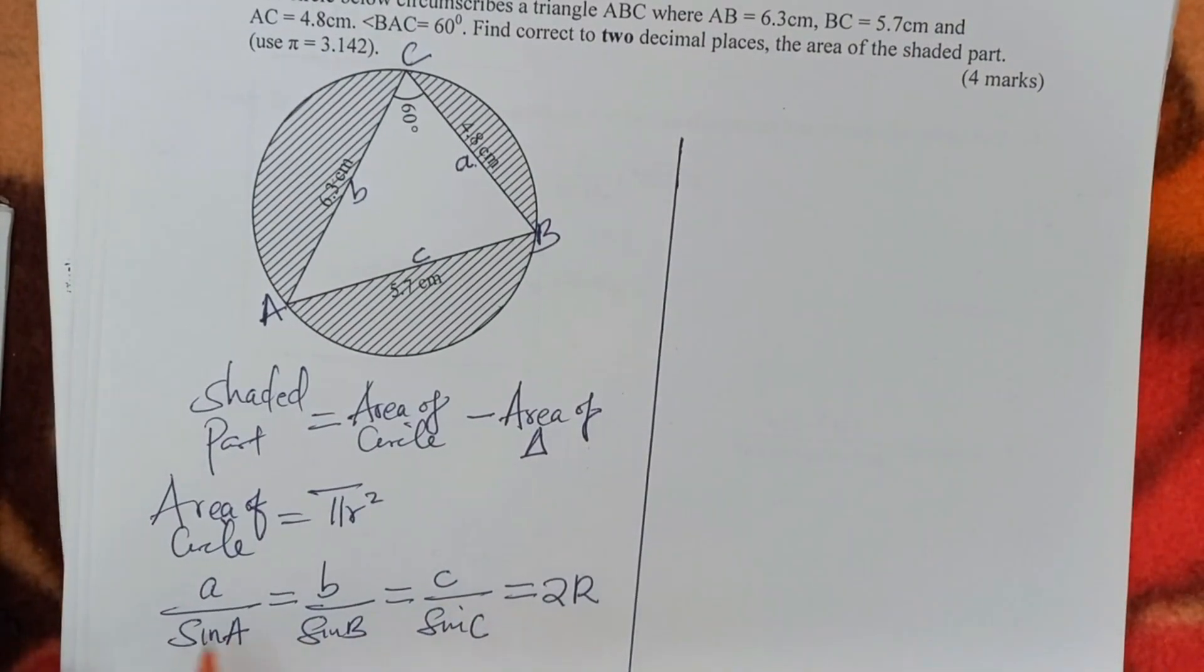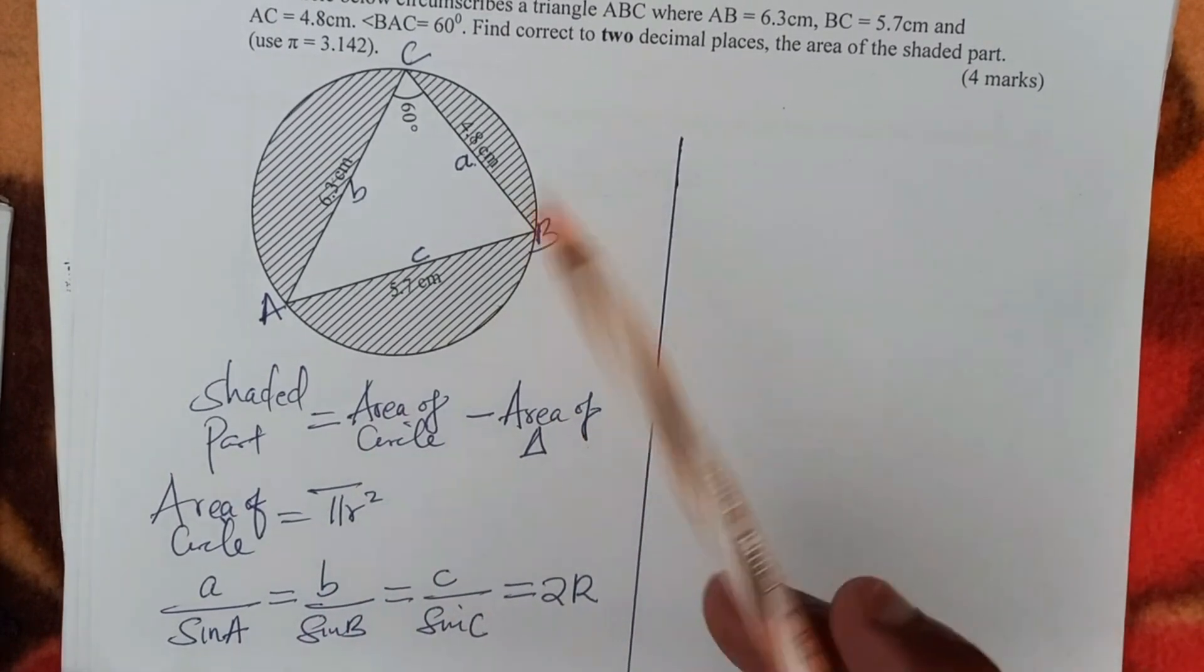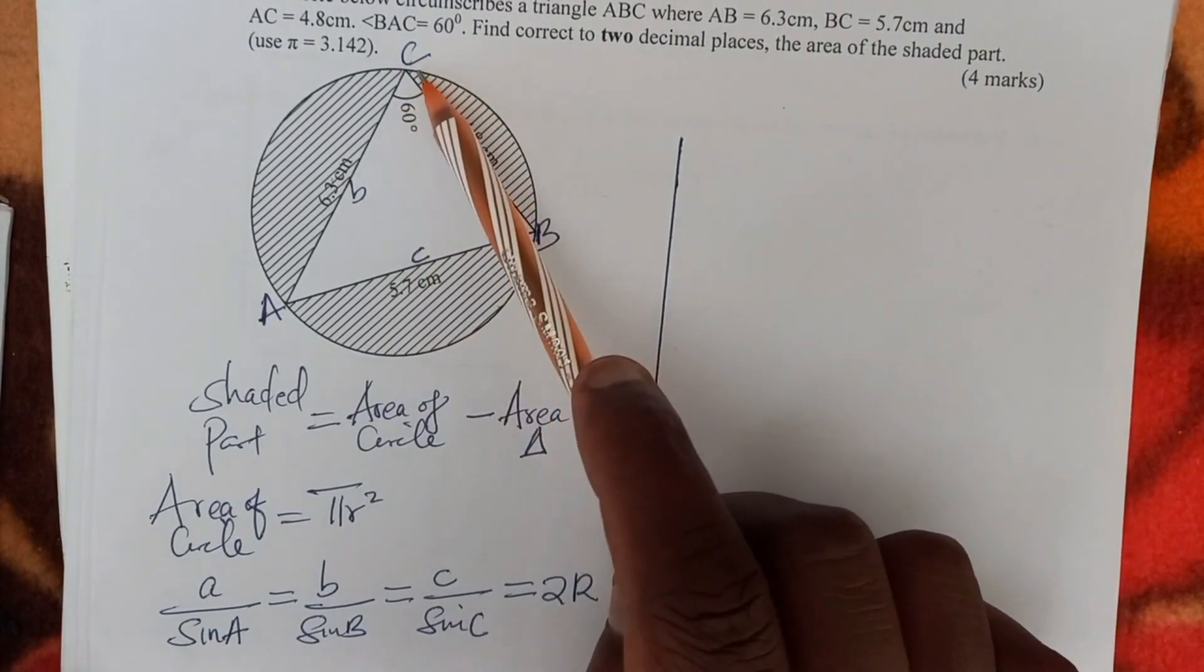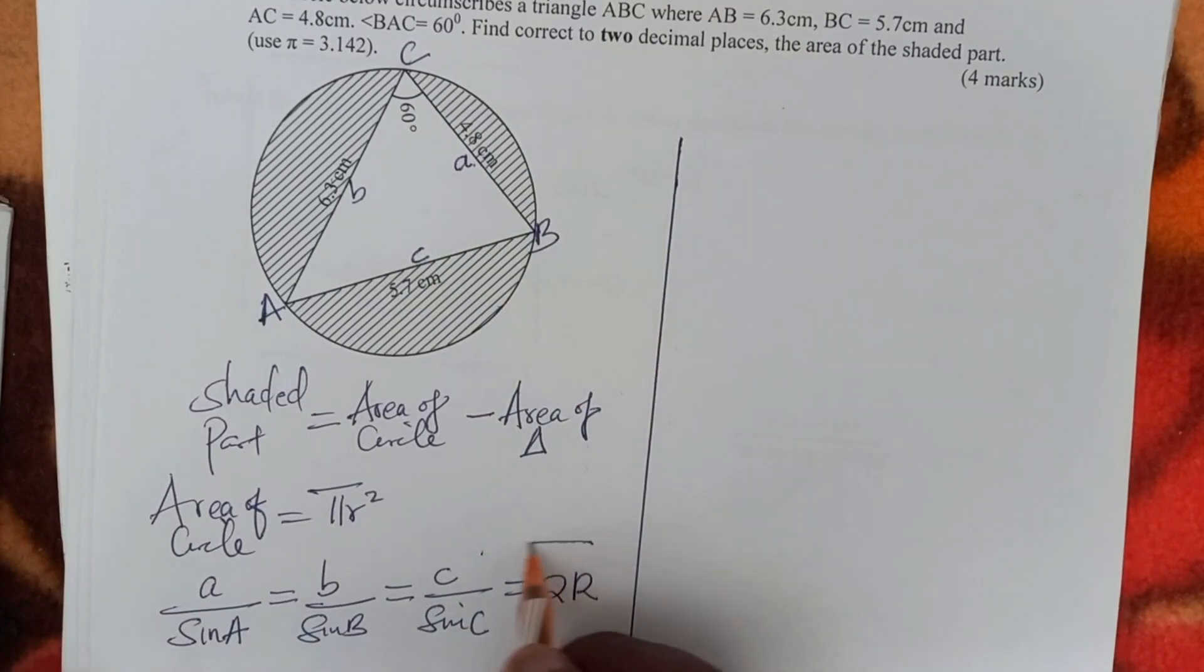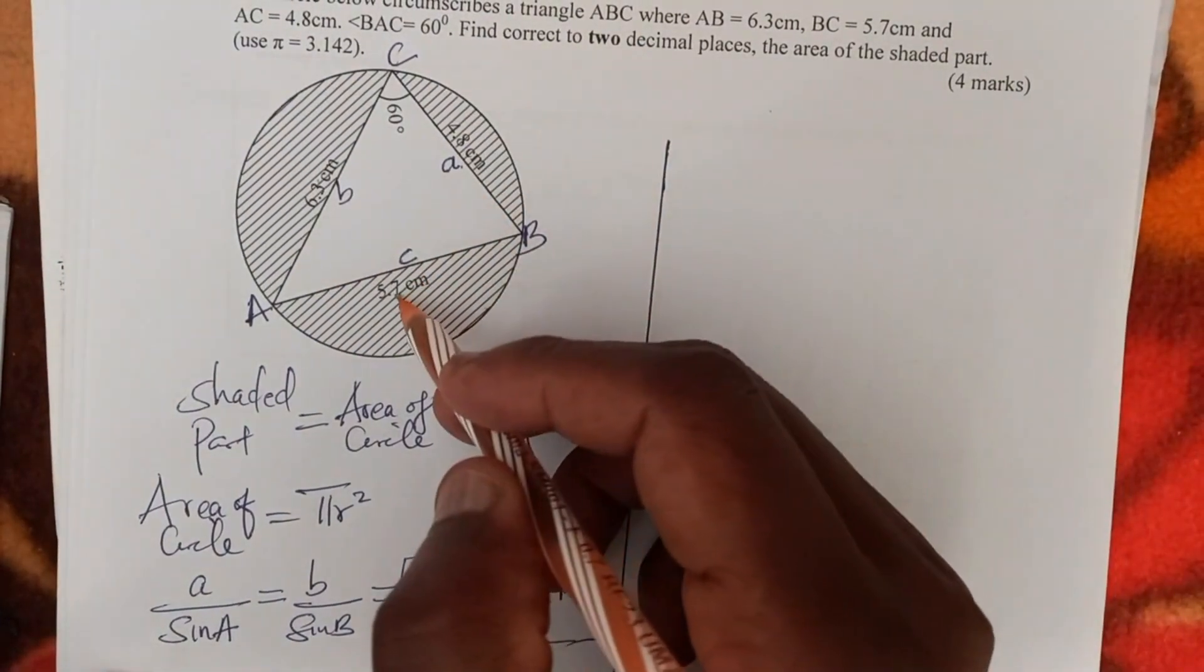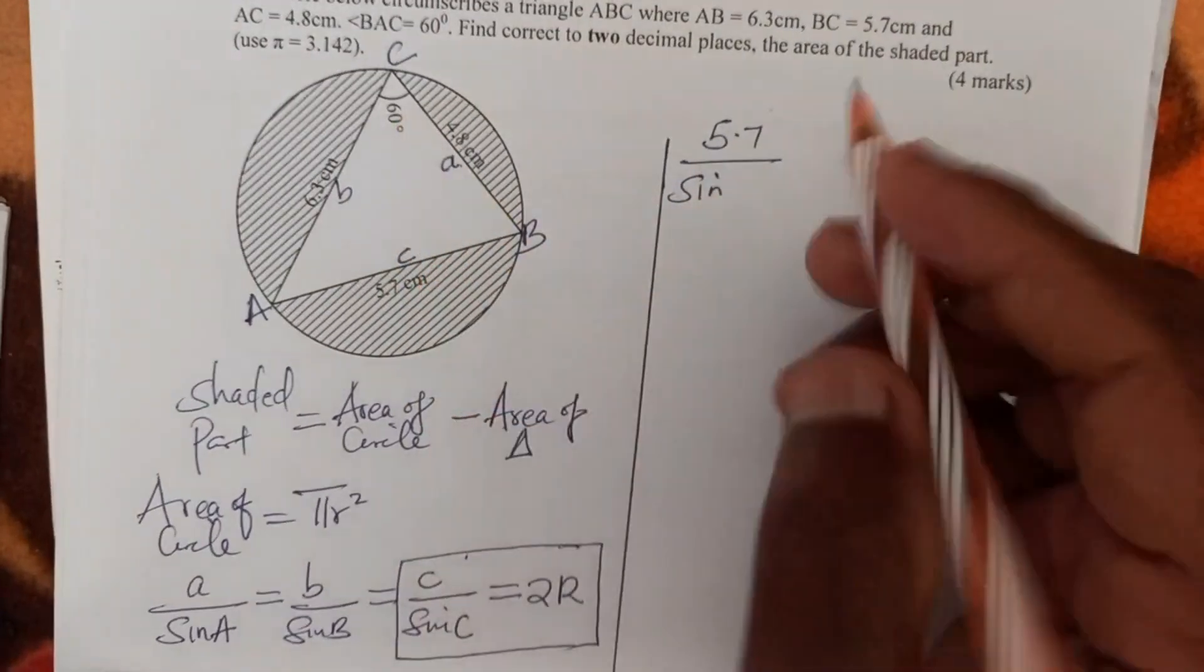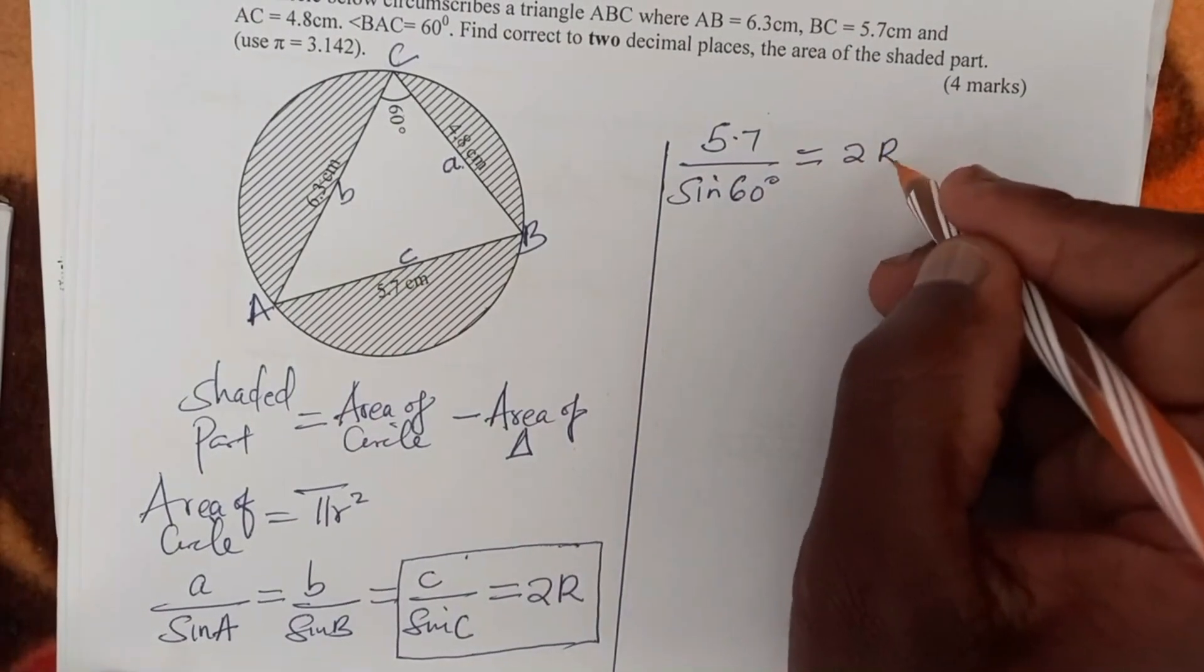We don't need to use all of these. We just consider what we have, where we have an angle and a side. And in this case, when you look at this, we have angle C in the diagram and you have the side c. So we can extract that. So c is 5.7 divided by sine of C, sine of that angle, which is 60 degrees, equals 2R.